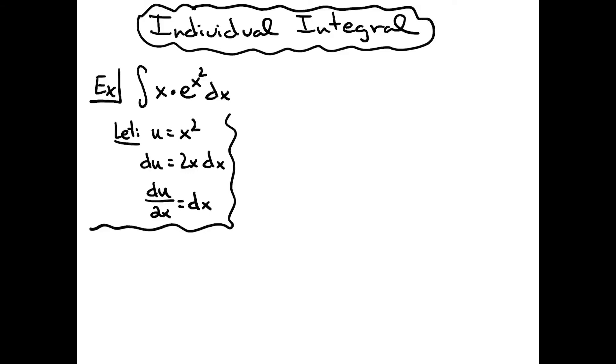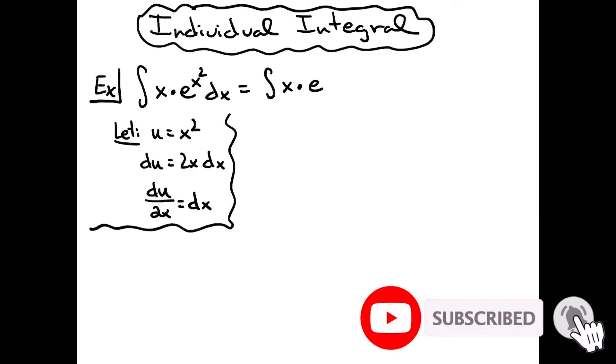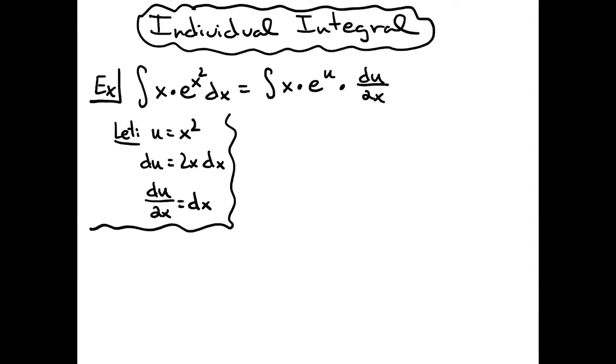From there, we're going to then come up here to the original problem and do some substitutions. We're going to have the integral of x times e. We're going to replace x squared with u and we're going to replace the dx with du over 2x.